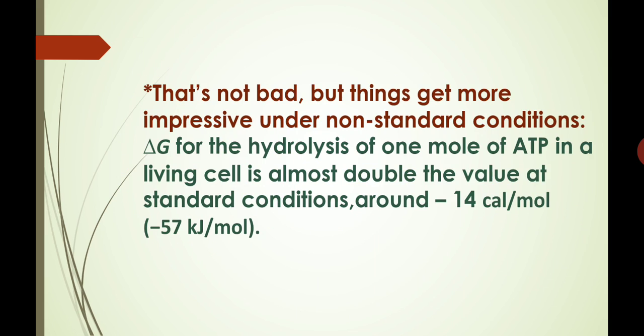That's not bad, but things get more impressive under non-standard conditions. Delta G for the hydrolysis of 1 mole of ATP in a living cell is almost double the value at standard conditions — around minus 14 kilocalories per mole, that is minus 57 kilojoules per mole.